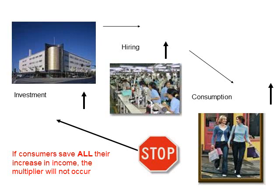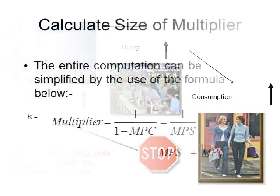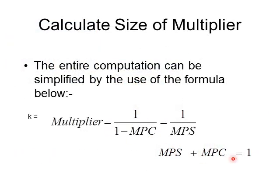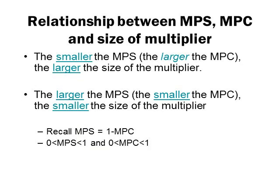So how do we calculate the size of the multiplier? We use the limiting factor, which is the MPS, and take 1 over MPS. Remember MPC + MPS = 1, so you can also use 1 over (1 − MPC). Using this ratio you obtain a K number, which is the multiplier. In this model, the more people save, the less additional business the company will receive. For the impact to be large, people must be willing to spend. Therefore, the smaller the MPS, the larger will be the size of the multiplier. Otherwise, any increase in income will just be saved away, and businesses will not receive more business from the increase in income.